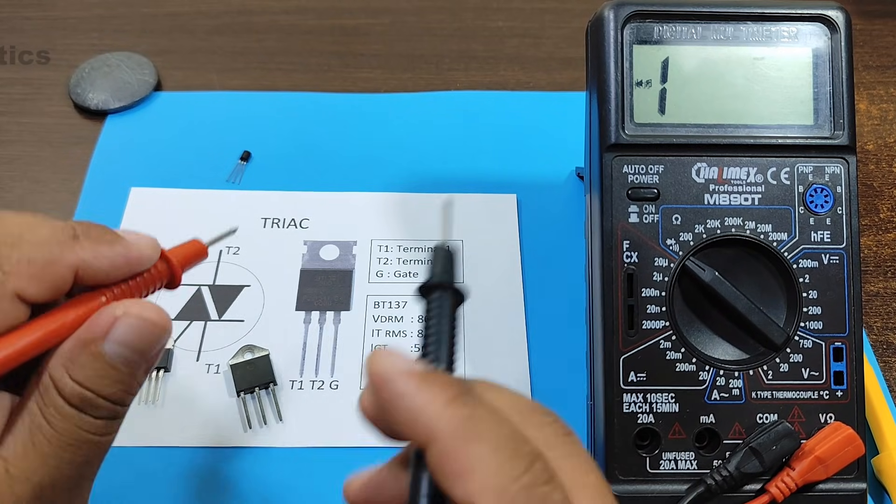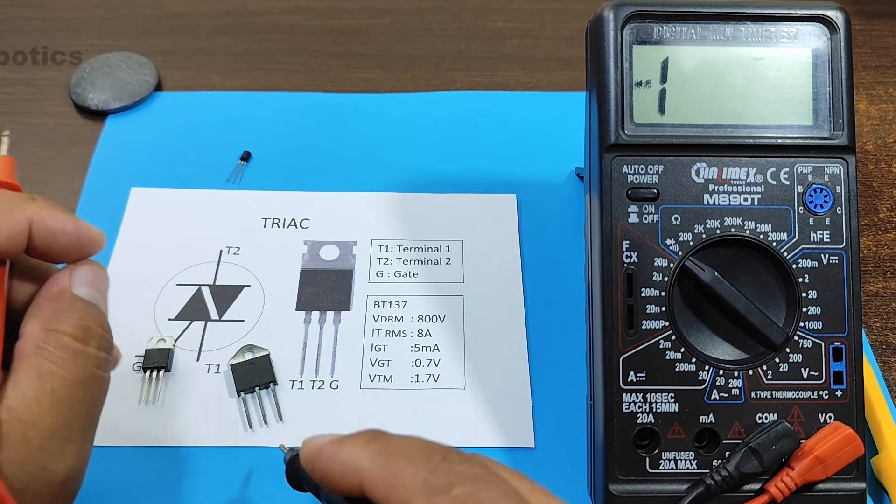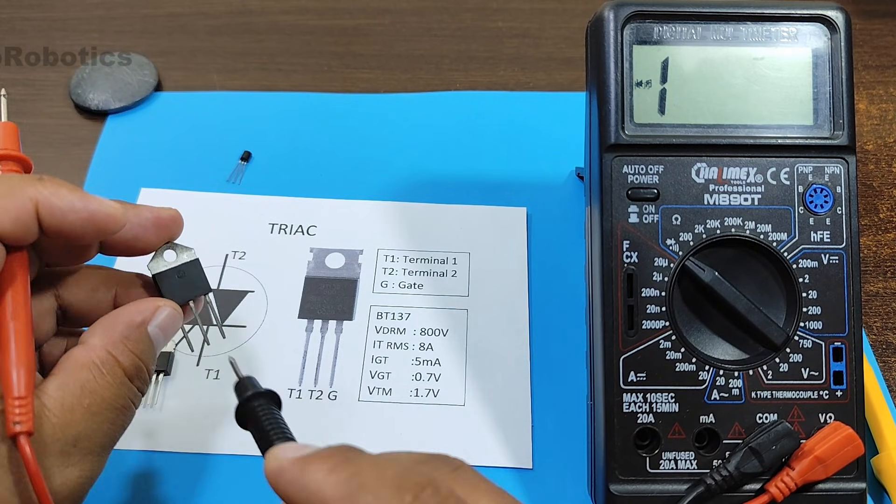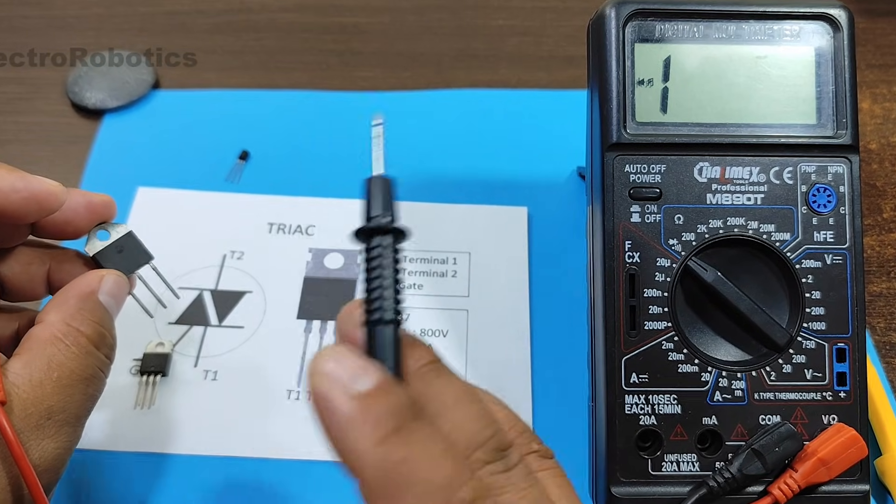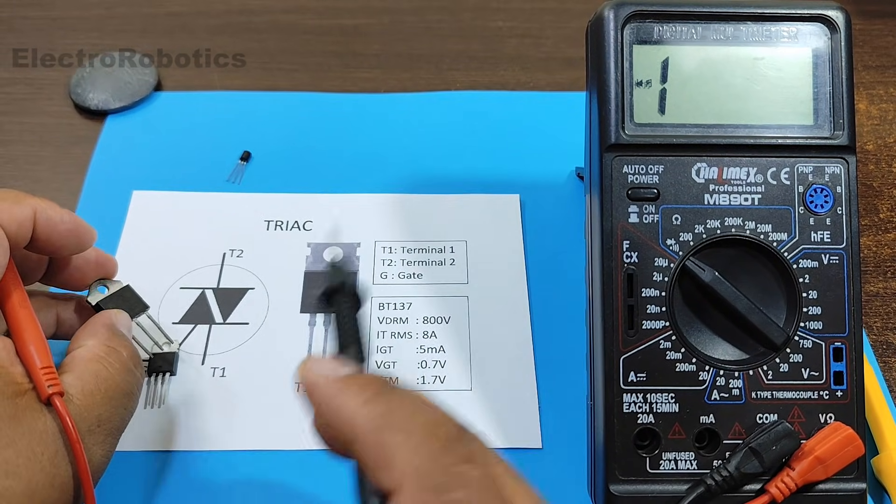It shows 55 ohms. That doesn't mean it's wrong. It simply means that, depending a lot on the power, the value will be much smaller. But it should never measure zero, nor a very large value.